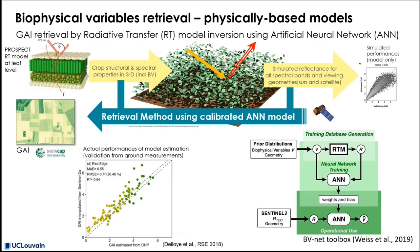These models are able to simulate the absorption, the transmittance, and the reflectance of the canopy for any spectral band, for all sun incident angles, and all viewing geometries.